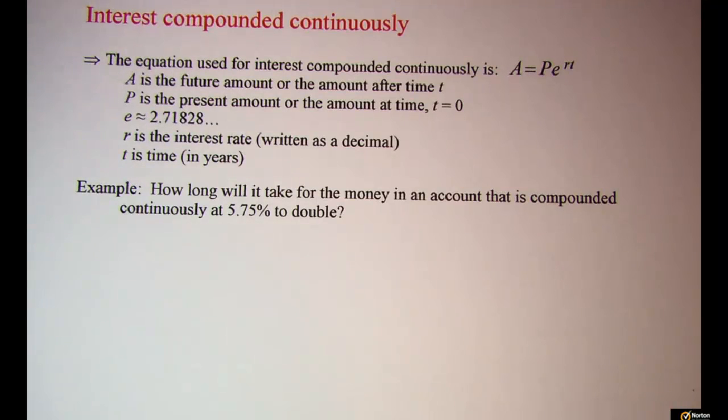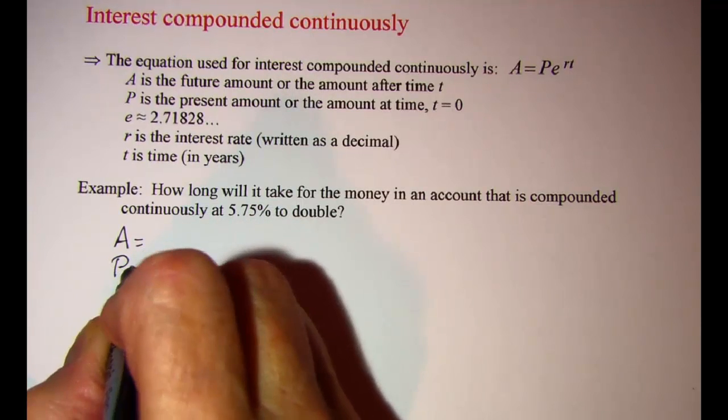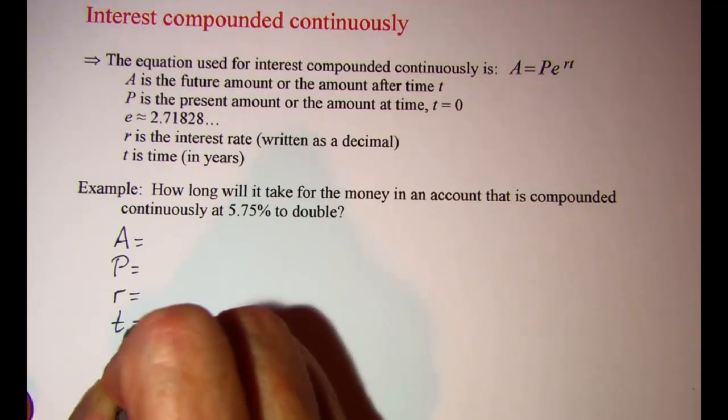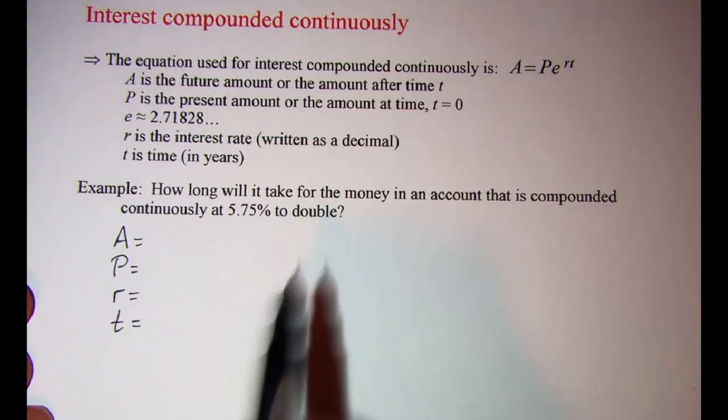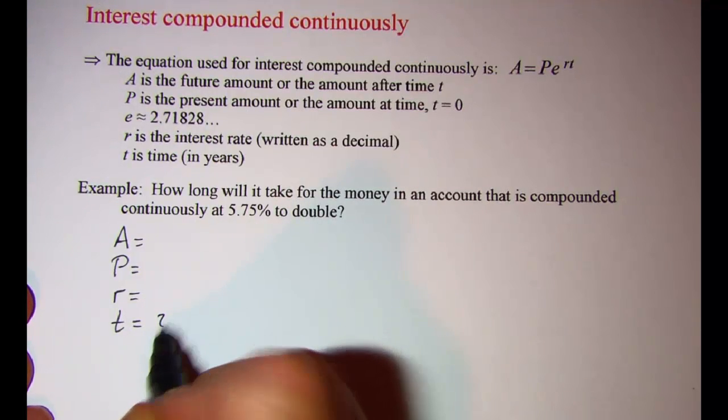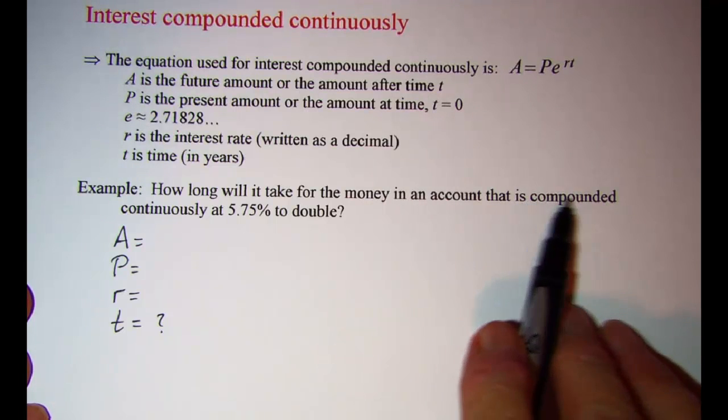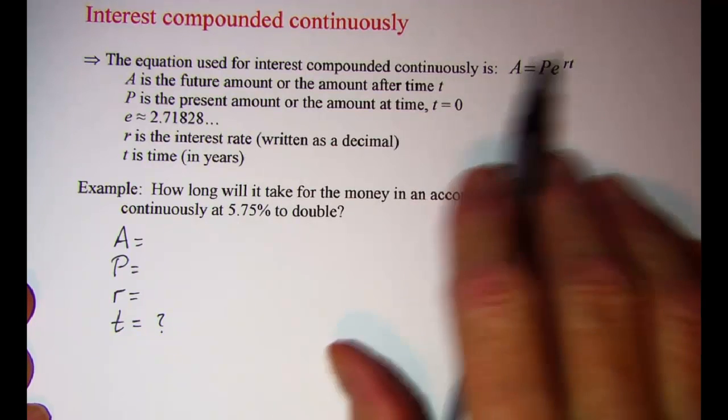So let's write our variables. How long will it take? So this means we're looking for our time. For the money in an account that's compounded continuously, that means we use this formula.